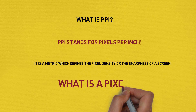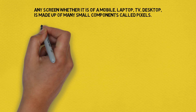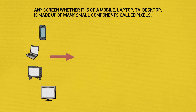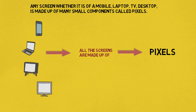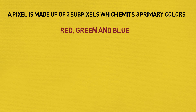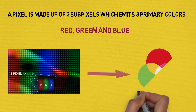To understand that, we have to first understand what a pixel is. Any screen, whether it is of a mobile, laptop, TV, or desktop, is made up of many small components called pixels. In a screen, thousands or millions of pixels are arranged in a line. A pixel is further made up of three subpixels which emit three primary colors: red, green, and blue. With the help of these three colors, a pixel can show any color on the screen.